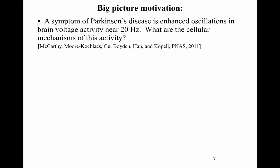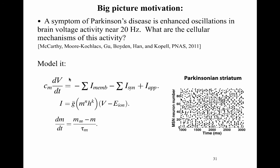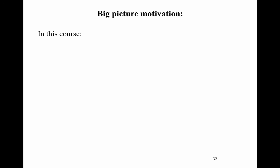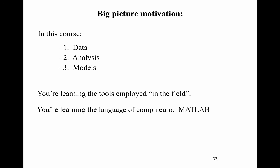Another example from work at BU with Nancy Kopell and Michelle McCarthy shows an equation with familiar Hodgkin-Huxley signatures: voltage dynamics, multiple currents with gating variables of familiar form. Simulations are represented using rastograms showing spiking versus time. The big picture of this course: data, analysis, and models — the tools employed by researchers, mathematicians, statisticians, neuroscientists, psychologists, and clinicians trying to understand the brain. You're learning the language of computational neuroscience, including MATLAB. Good luck on the exam.